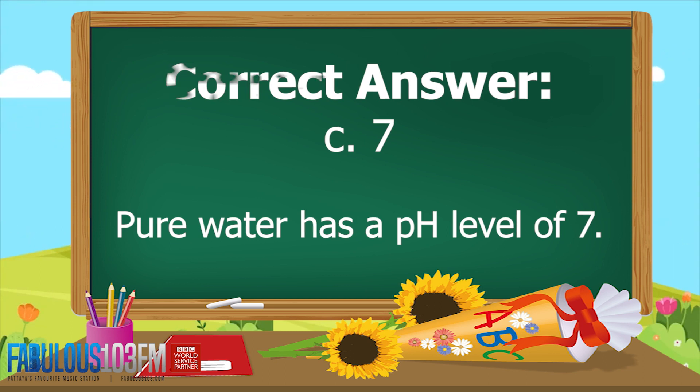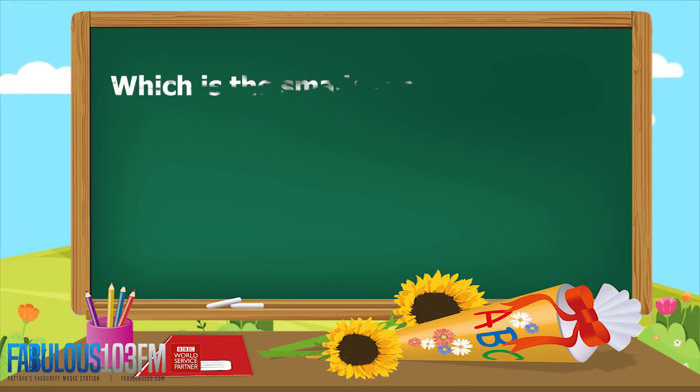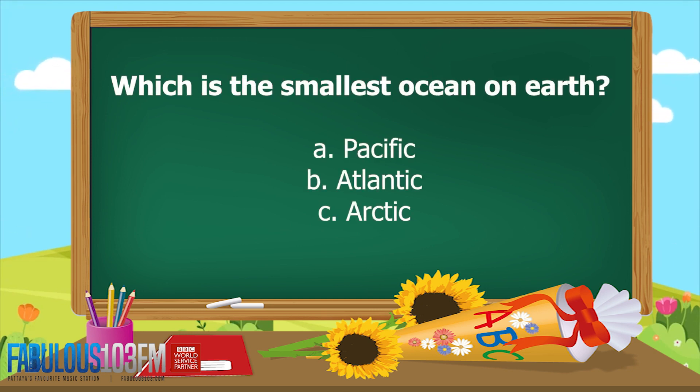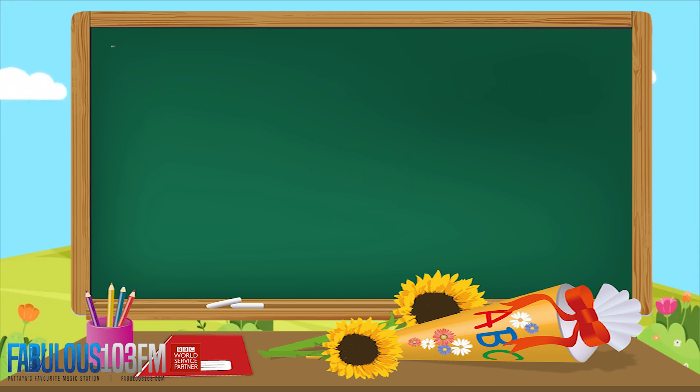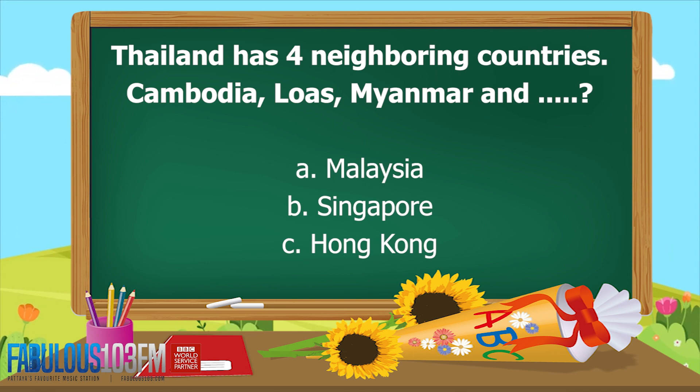And the correct answer is C: 7. Pure water has a pH level of 7. New questions for today: which is the smallest ocean on earth? Is it A: the Pacific, B: the Atlantic, or C: the Arctic?